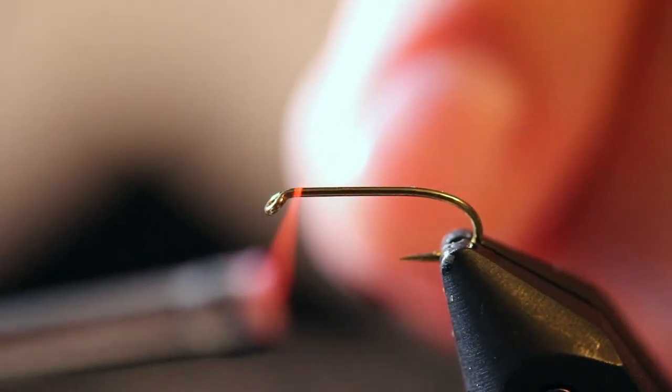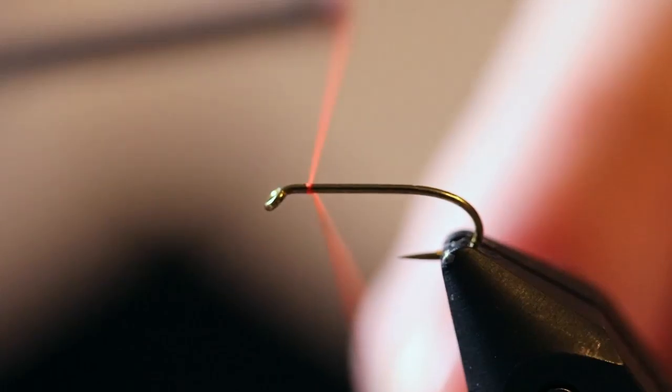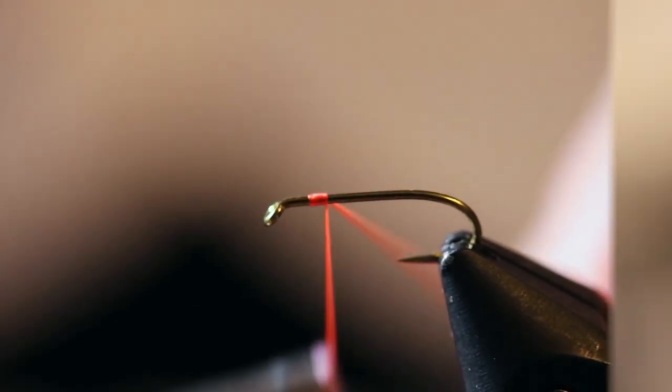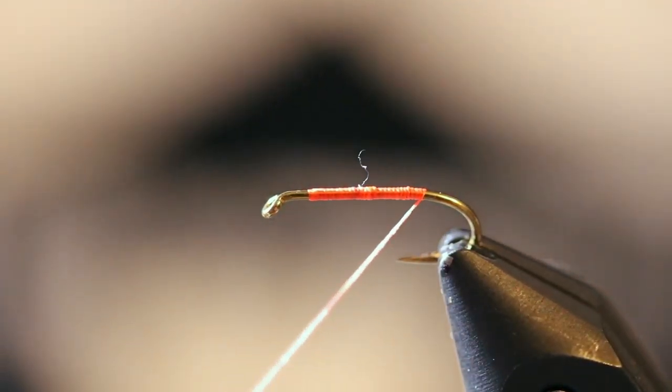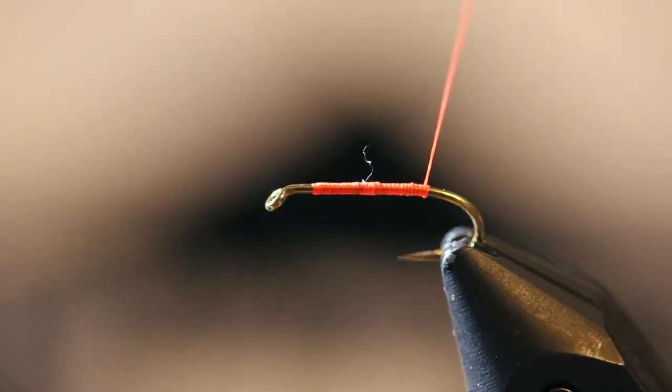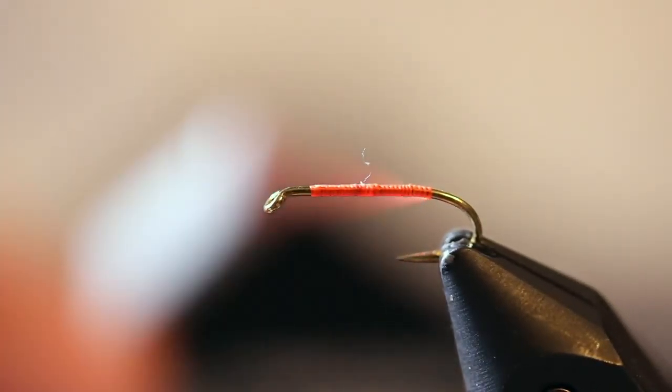What you want to do is start your thread on the shank of the hook. Just work your way down to right before the bend of the hook.